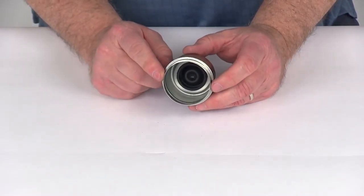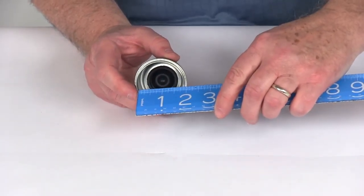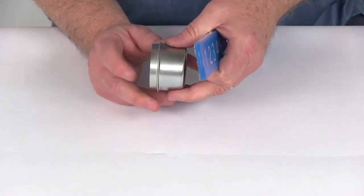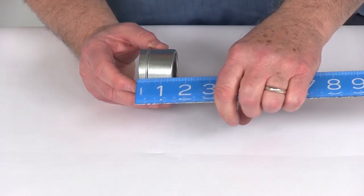Now the flange diameter, which is this measurement here, that would be the same measurement as the inner diameter of the hub that's going on. It's going to be right at 1.99 inches. The overall height from the bottom to the very top is going to be right at 1.4 inches.